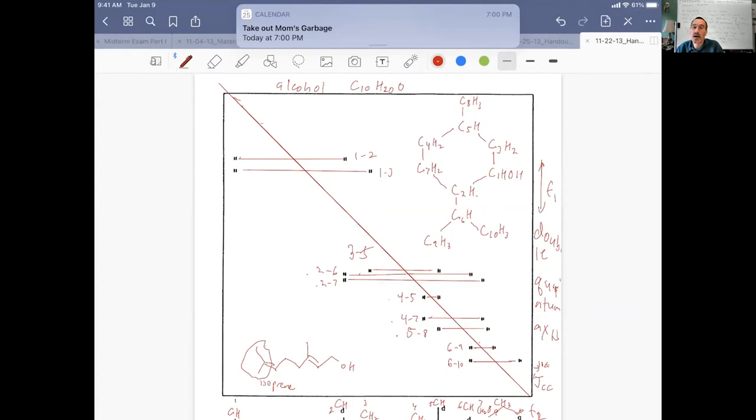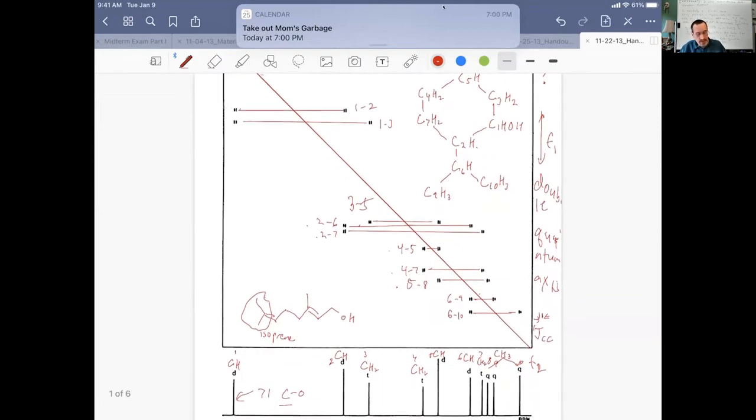Just by identifying these pairings off the double quantum axis, we've built up the entire skeleton of the molecule. That's really powerful because it essentially blew away everything. We didn't have to assign protons. We didn't have to deal with a COSY. We didn't have to deal with overlap. Now you notice we still have some questions of stereochemistry.